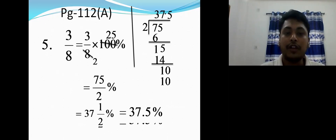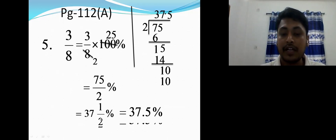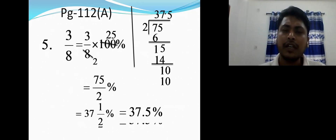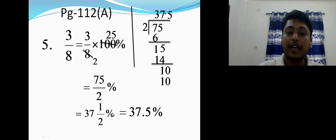So cut 4 into 8 and 4 into 100, giving 25. Multiply 3 and 25 to get 75, then divide by 2. You get 37 and a half as a mixed number, or 37.5 in decimal — both can be written. The decimal form is preferred because percentage results are generally written in decimal.